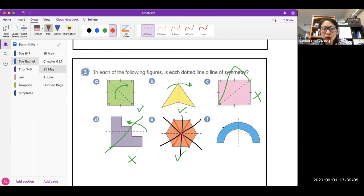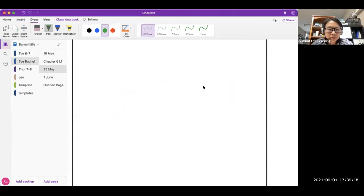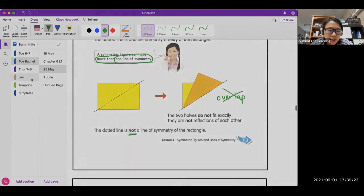So for this rainbow shape, is it a line of symmetry? Yes or no? Yes. Yeah. So that's what we need in this session, looking at the line of symmetry.